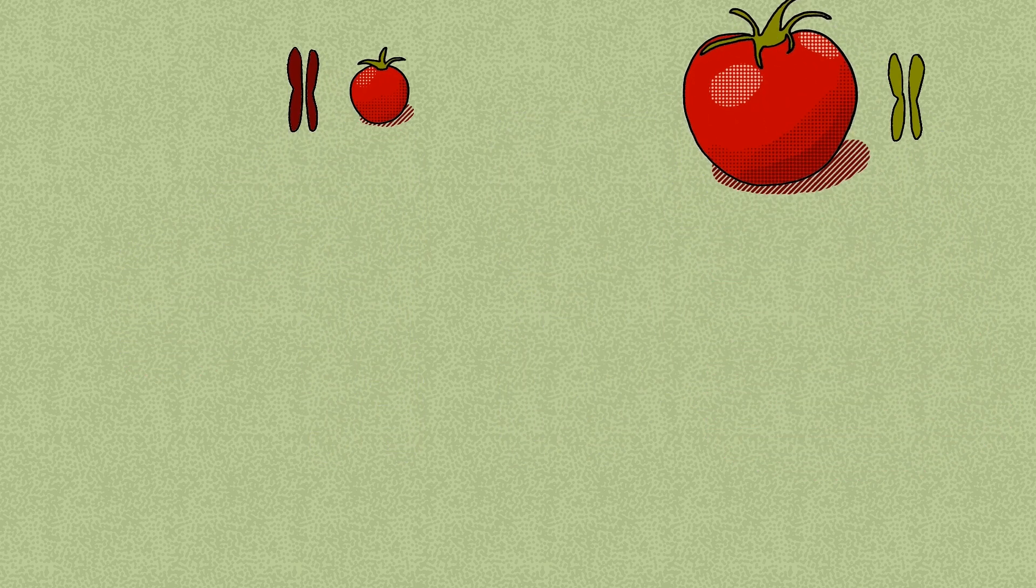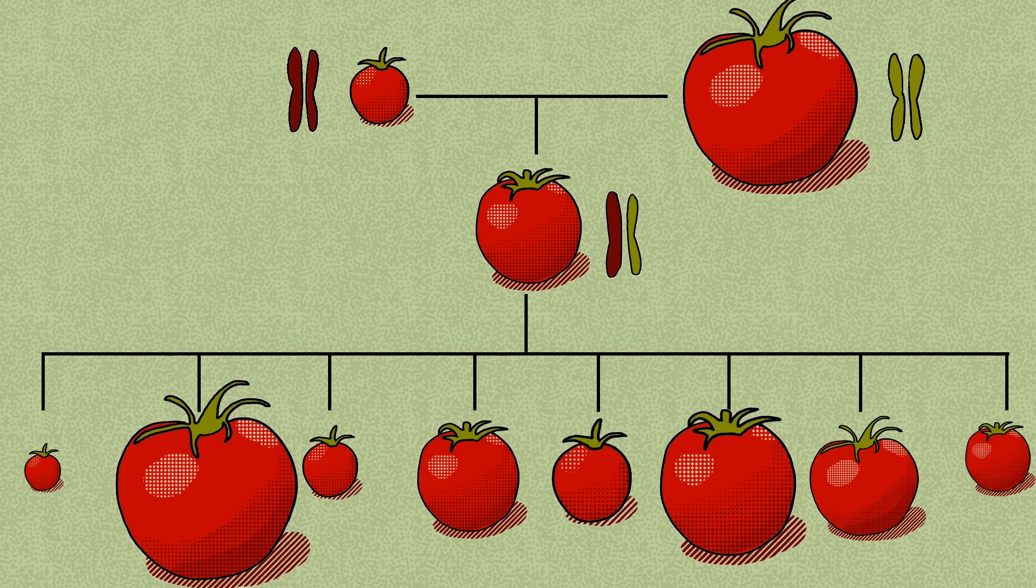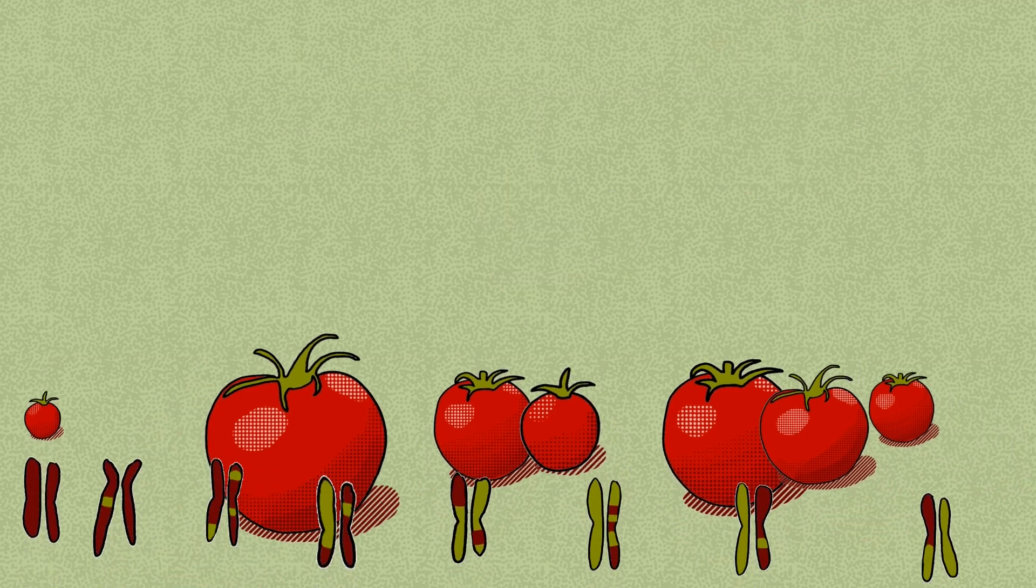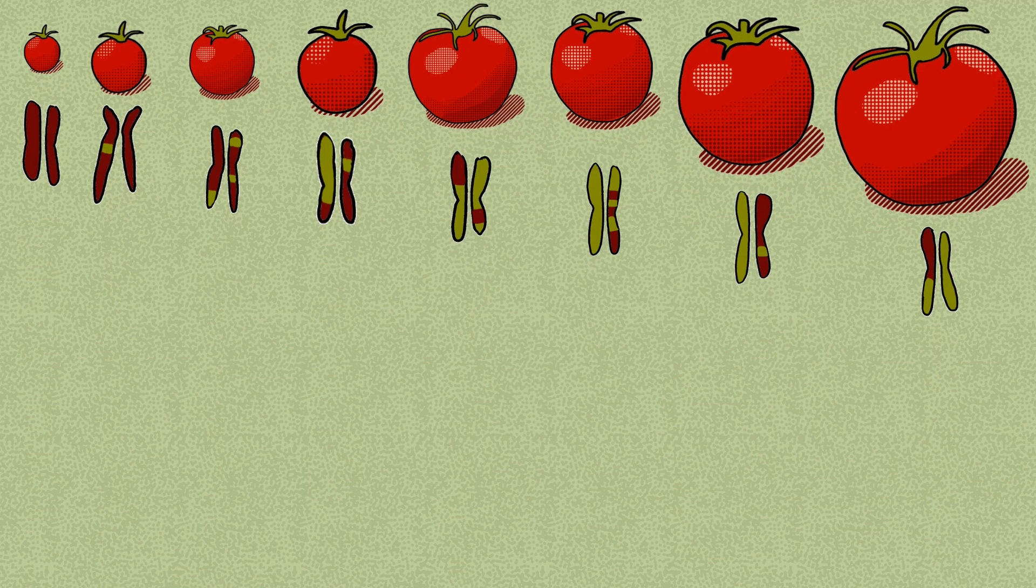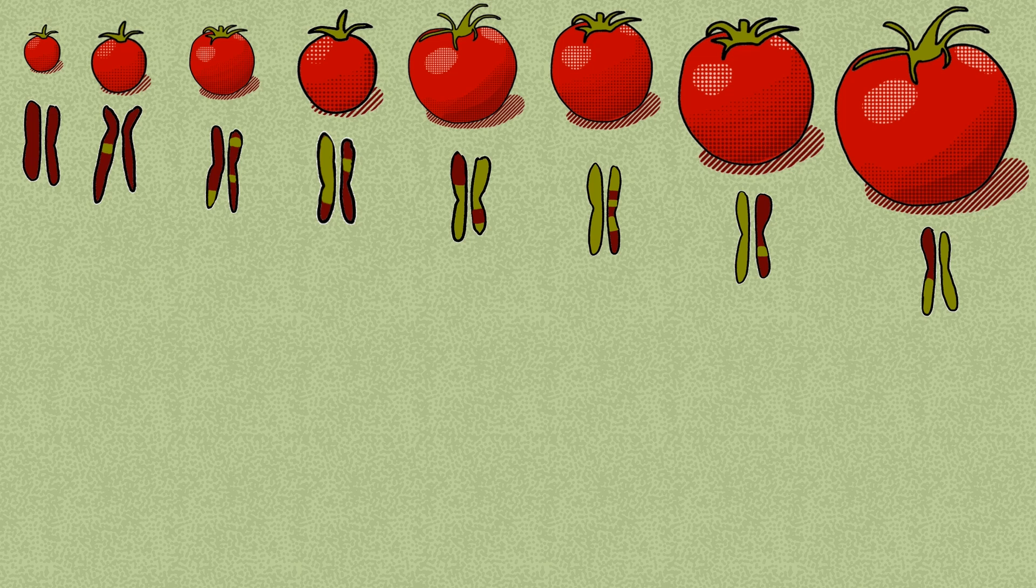After the map's complete, we'll cross the two plants together, then cross their offspring with each other. The resulting grandchildren will range widely in size and have many different combinations of their grandparents' genes. We'll measure and genotype all of these tomatoes.